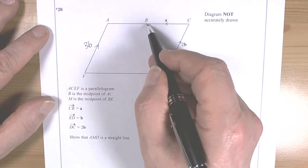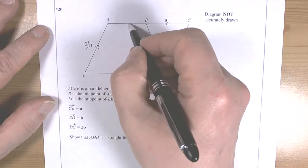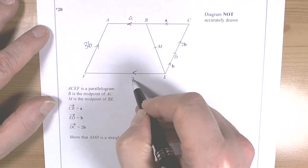They're telling us that B is the midpoint of this line here, so we now know that that is a as well. So therefore the whole of this must be 3a.